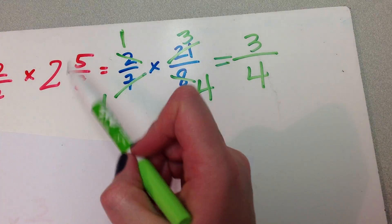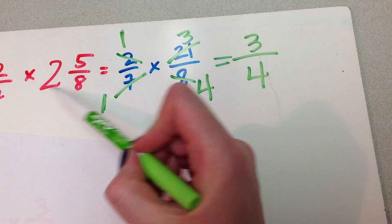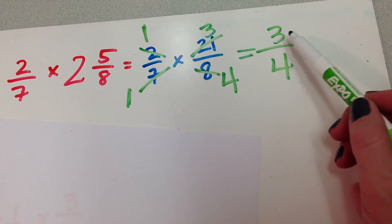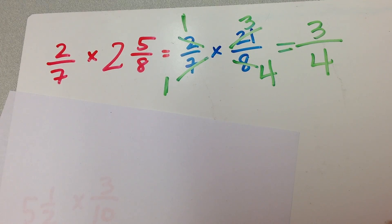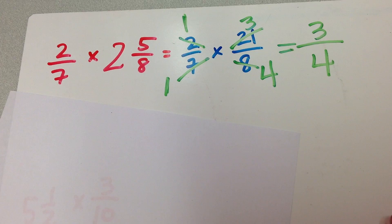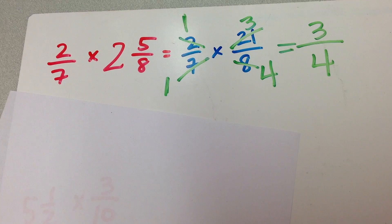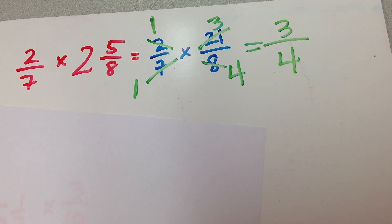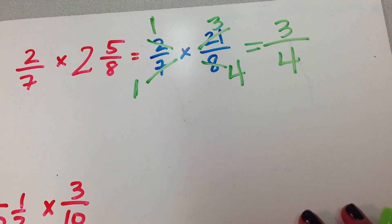And you might be asking yourself, how come that happens? This is a way bigger number than 3 fourths — why, when I multiply it, does it come out to be a smaller number? The reason for that is that multiplication and division in fractions is opposite of multiplication and division in whole numbers. When we multiply whole numbers, we're going to get a larger number. When we multiply fractions, chances are we're going to get a smaller number, and it's just something you'll have to get used to because it is sort of weird.